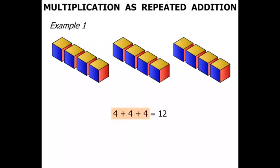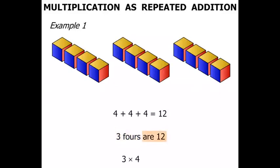Now how many 4's have we got? We've got 3. So we can say that 3 4's are 12. And 3 4's can be written using the multiplication sign: 3 times 4, and it equals 12.